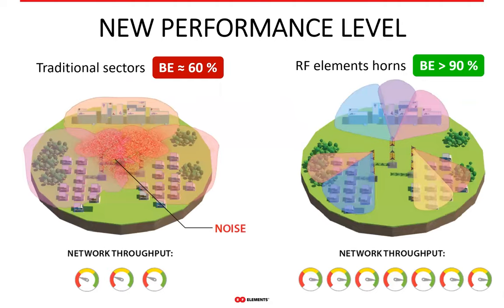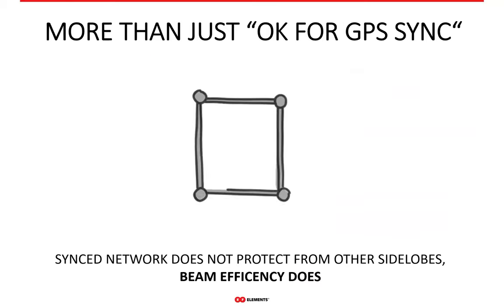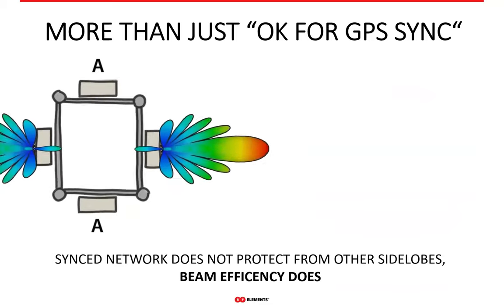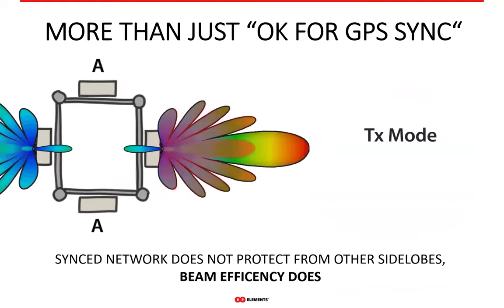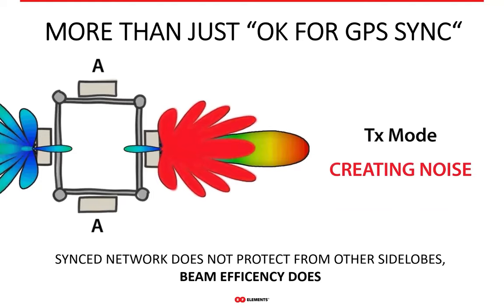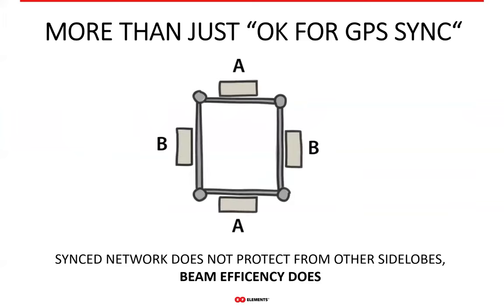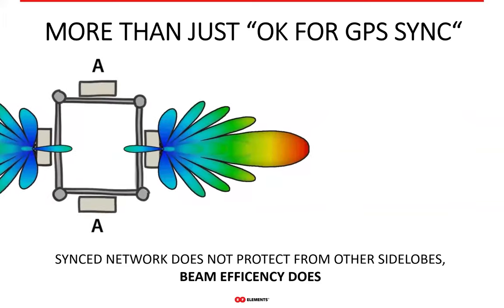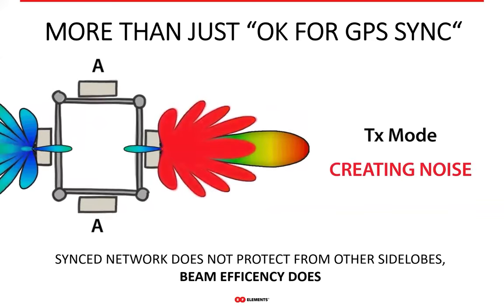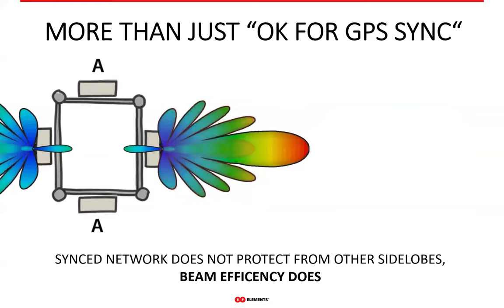Addressing the most pressing problem in WISP networks becomes much more straightforward with one final piece of advice: use antennas with high beam efficiency. High beam efficiency equals high throughput. GPS synchronization ensures radios transmit and receive at the same time, protecting from self-interference, but not from the side lobes of competitors' antennas. High beam efficiency ensures you don't have to worry about interference at all — it does not receive it, so you don't need to try to deal with noise in the first place.